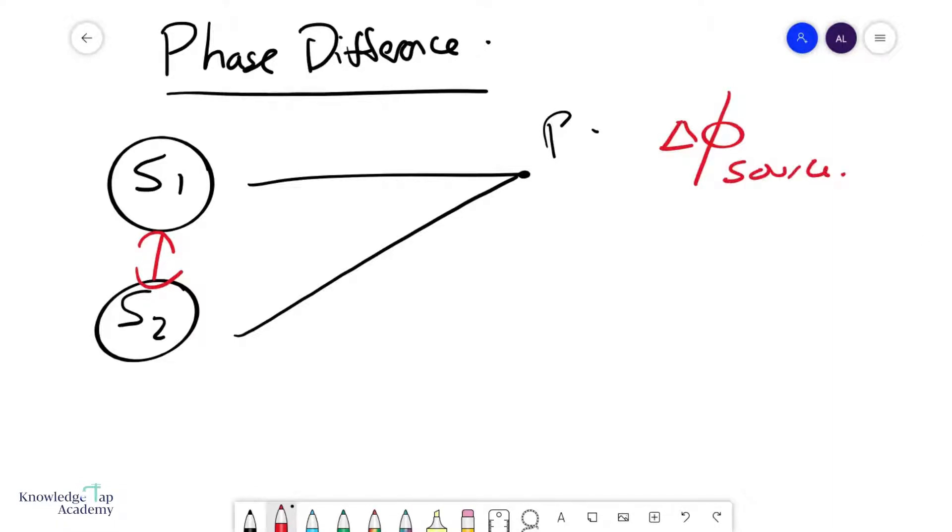Now in the A-levels, a lot of times these sources will be in phase, in which case this will be zero. But sometimes on the odd occasion, the question may say that these sources are in antiphase, in which case the phase difference is π radians.